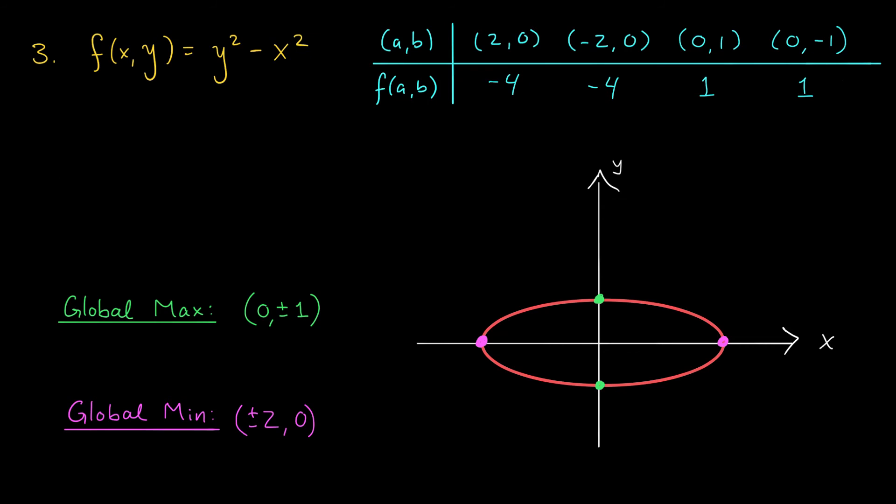I'd like to stop for a second and appreciate the beauty of this mathematics. Remember, in our overview video, I told you that the global max and min would occur at points where the level curves of f are just tangent to this constraint curve. Well, what are our level curves? If we set f of xy equal to k, we get the equation y squared minus x squared equals k, which is the equation of a hyperbola.